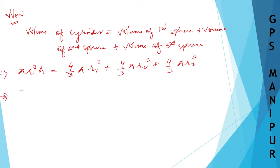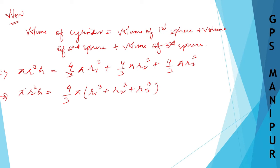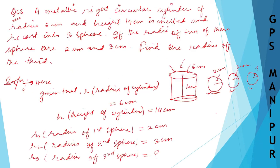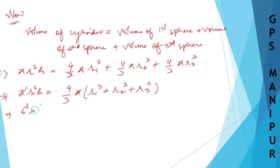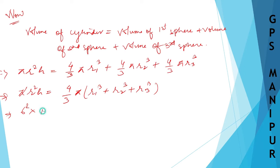We can take (4/3) and π as common from the right side. From both sides, pi cancels. So r² h = (4/3)(r1³ + r2³ + r3³). Substituting: 6² × 14 = (4/3)(2³ + 3³ + r3³), where r1 = 2 cm and r2 = 3 cm.